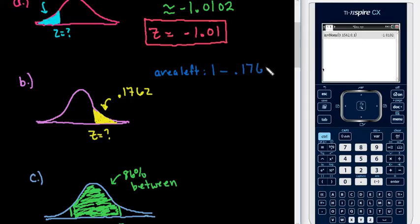So I would have to do 1 minus .1762, so this is area to right, just so you know where that came from. So if it's shaded to the right and it asks for the area, you would have to do this first before going to the inverse norm. So this gives us .8238.